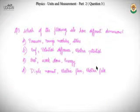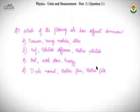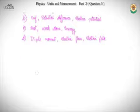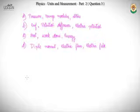Question three: which of the following sets has different dimensions? Option A: pressure, Young's modulus, stress. Option B: EMF, potential difference, electric potential. Option C: heat, work done, energy. Option D: dipole moment, electric flux, electric field. This is a JEE-style question requiring patience — do it slowly to avoid mistakes.